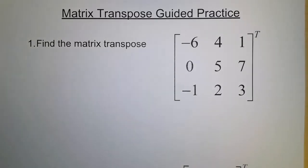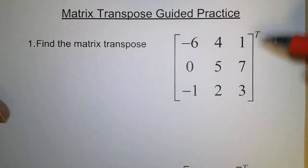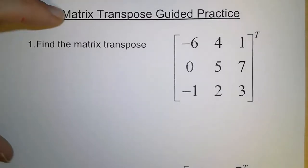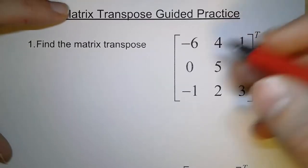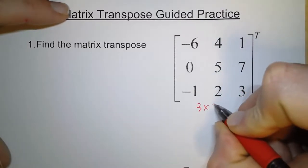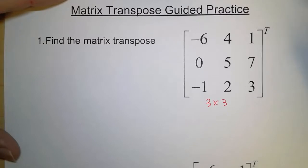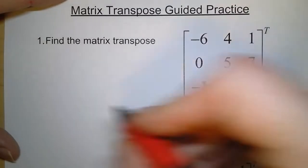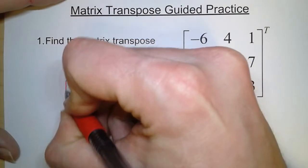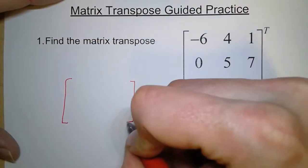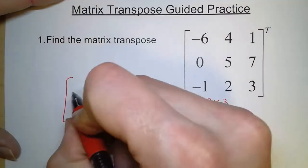Now, the idea of matrix transpose is we have a matrix, and any time you see this little letter T up there, what happens is we're going to make one quick alteration. First, we need to state what the order is. So here this is a 3 by 3 matrix. So when we transpose this, the rows and the columns are going to switch places. So that means that these two numbers are going to switch — thankfully they're the same — so we're going to end up with a 3 by 3.